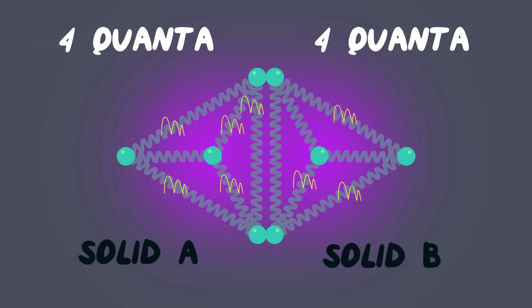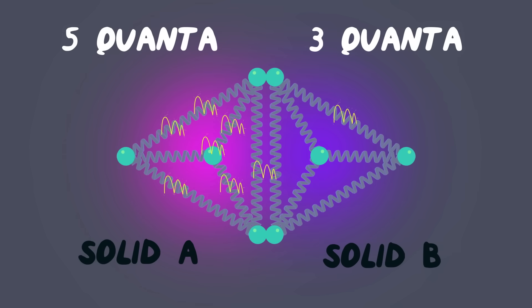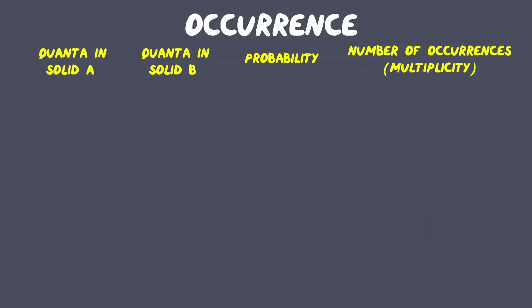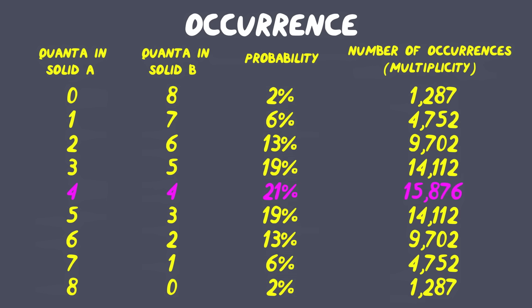If we assume that each microstate is equally likely, we can see that some of the energy configurations have a higher probability of occurring than others. That's due to their greater number of microstates.